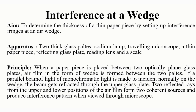The main aim of this experiment is to find the thickness of a thin paper strip by setting up an interference pattern at an air wedge. The major apparatus required are two thin flat glass plates, sodium lamp, travelling microscope, a thin paper piece, reflecting glass plate, reading lens, and a scale.